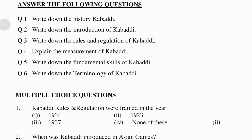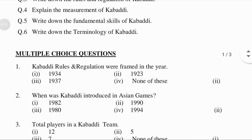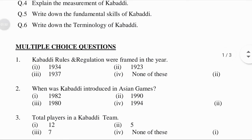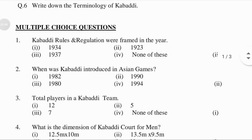Now moving to multiple choice questions. Question: Kabaddi rules and regulations were framed in the year — first option 1934, second option 1923, third option 1937, fourth option none of these.